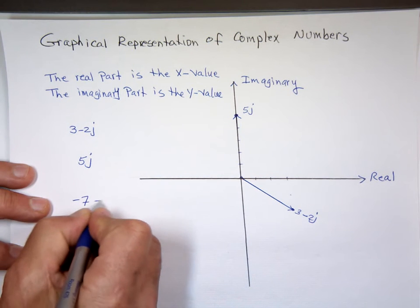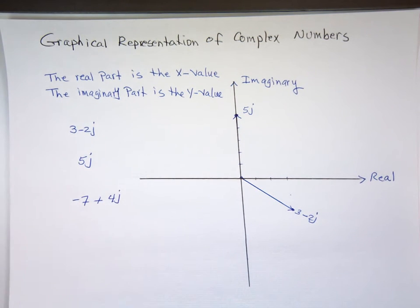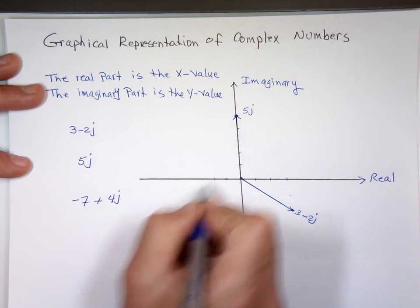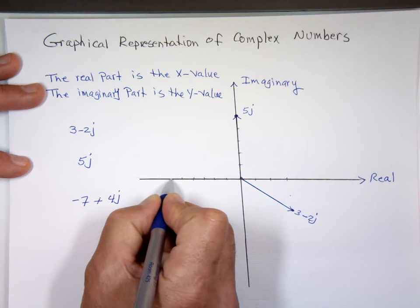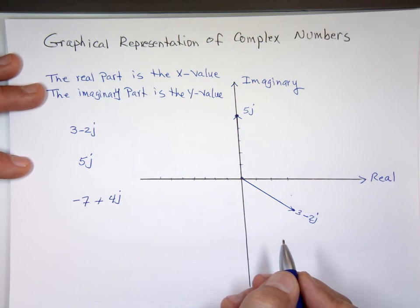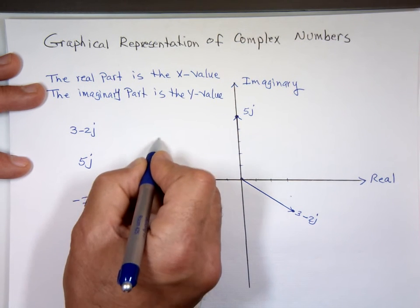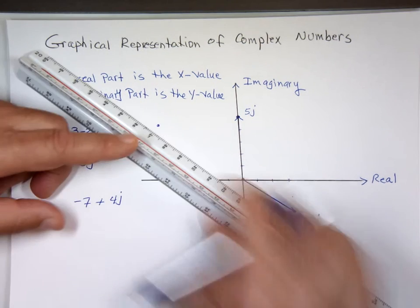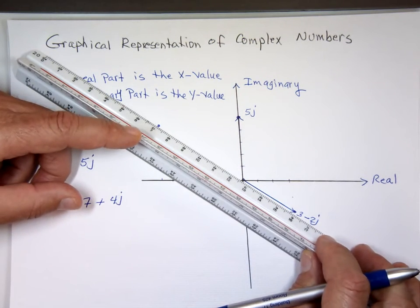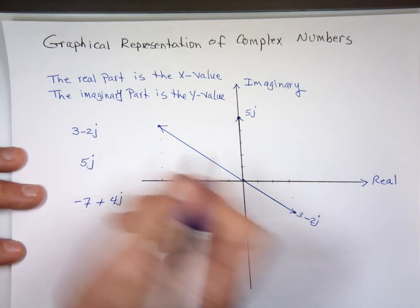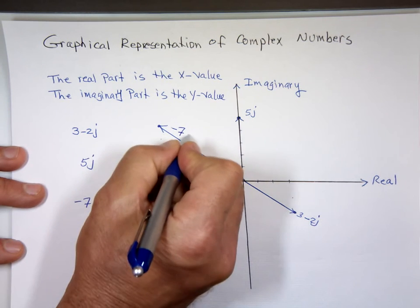What's negative 7 plus 4j? Go 7 to the left. 1, 2, 3, 4, 5, 6, 7. Now go how many up or down? Up 4. 1, 2, 3, 4. That's negative 7 plus 4j.